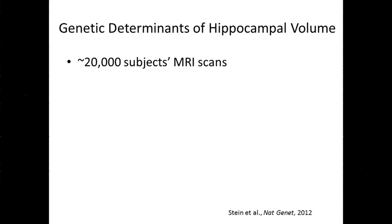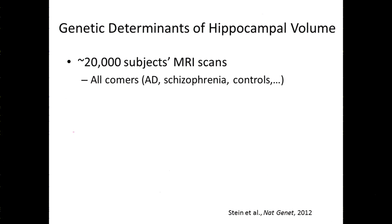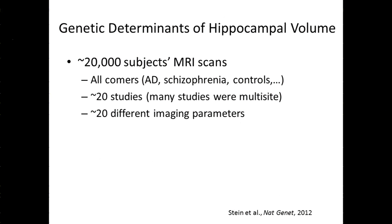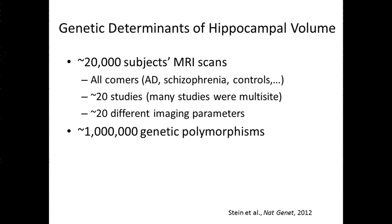In this study, the authors — a real computational force — looked at hippocampal volume across 20,000 subjects' MRI scans, so very broad. But to get a sample size that large, they had to take all comers: patients with Alzheimer's, schizophrenia patients, healthy young controls, and healthy older controls. This was gathered from about 20 different studies, many multi-site in nature. Across the 20 studies, there are about 20 different imaging parameters. On the genetics front, they looked at about a million different genetic polymorphisms, imputed from 10 different SNP chips.